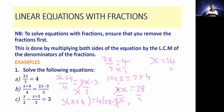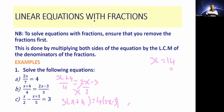So now we can soldier on and finish up what we have started. We have to expand the brackets. That is 3 times x gives us 3x, then 3 times 4 gives us 12, which is equal to 4 times 2x giving us 8x, then minus 4 times 3 giving us 12.